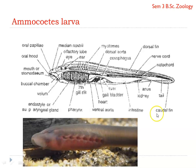The Ammocoetes larva is not a ciliary feeder. Even though they possess cilia in the pharyngeal region, feeding current is maintained not by ciliary beating but by muscular action — this is the main advancement seen in Ammocoetes larvae compared to Amphioxus. The Ammocoetes larvae have a prolonged larval life, ranging from three to seven years, which is species-specific.